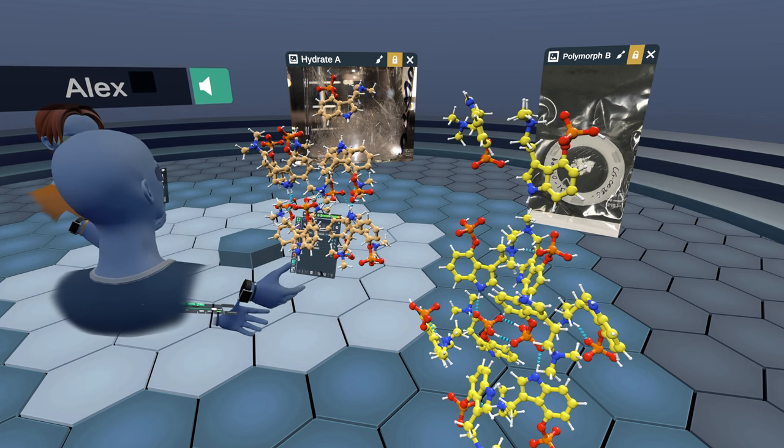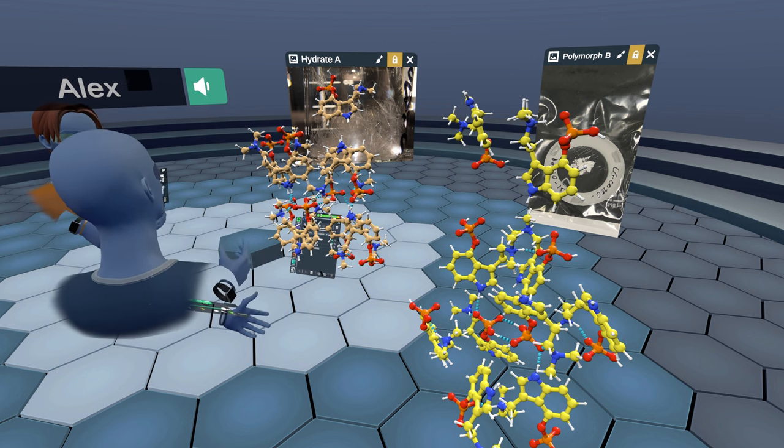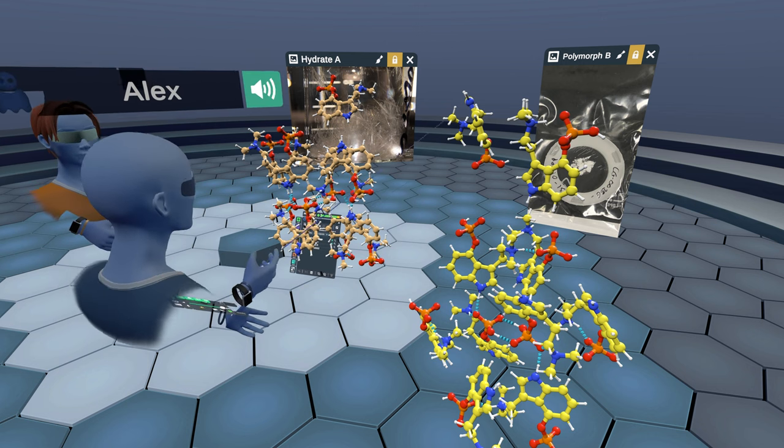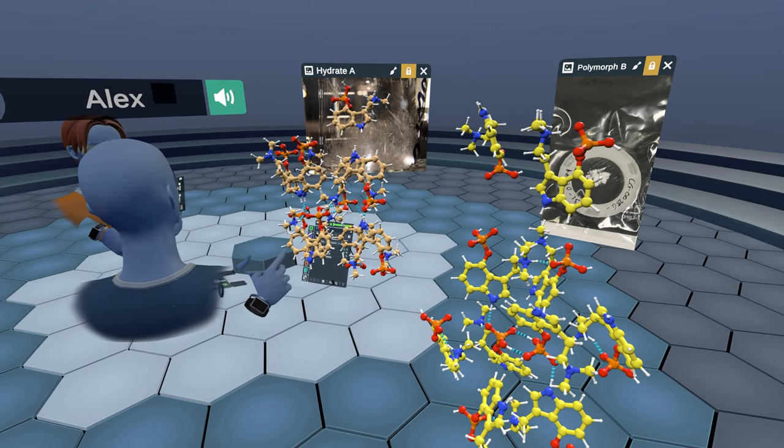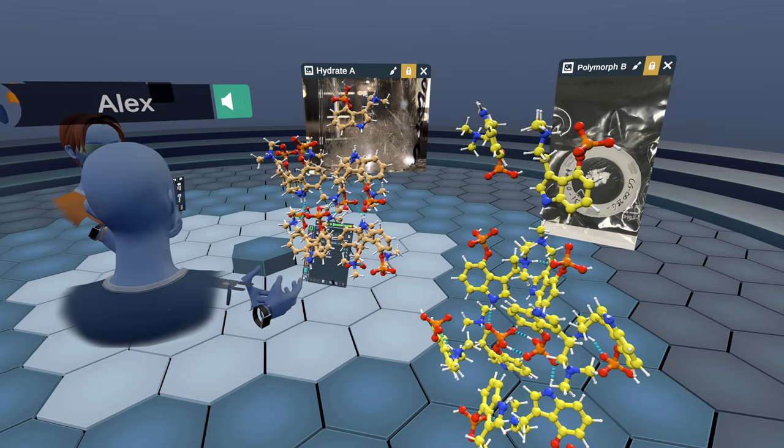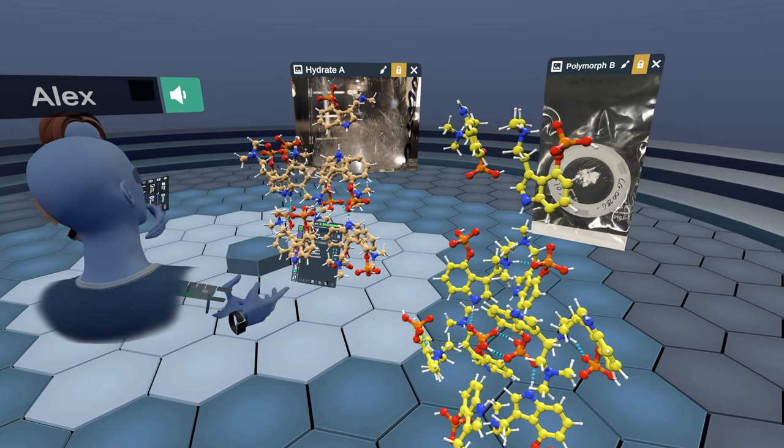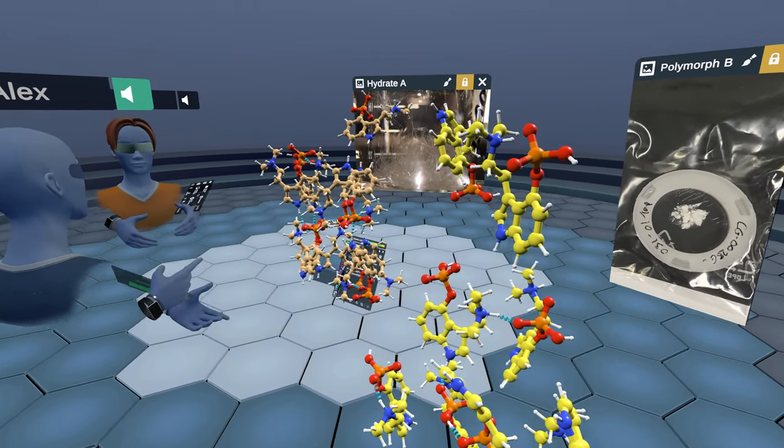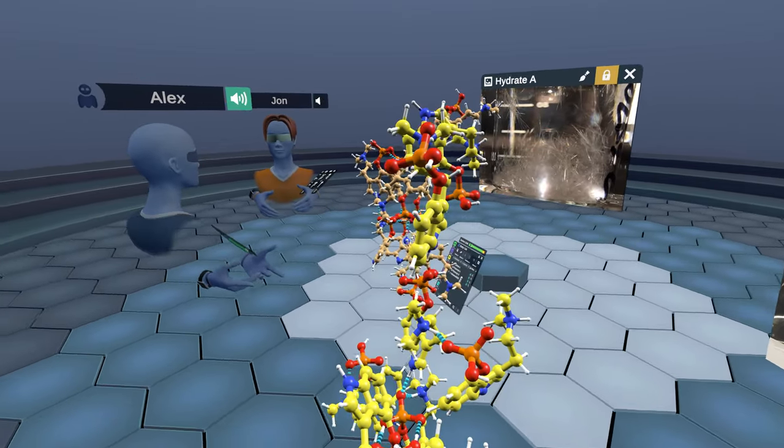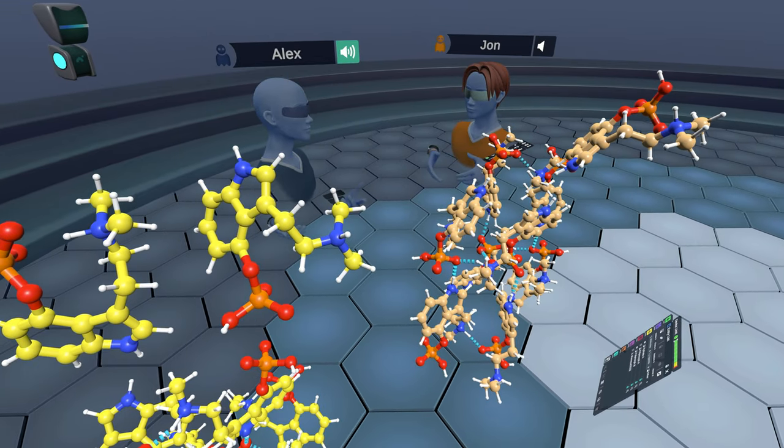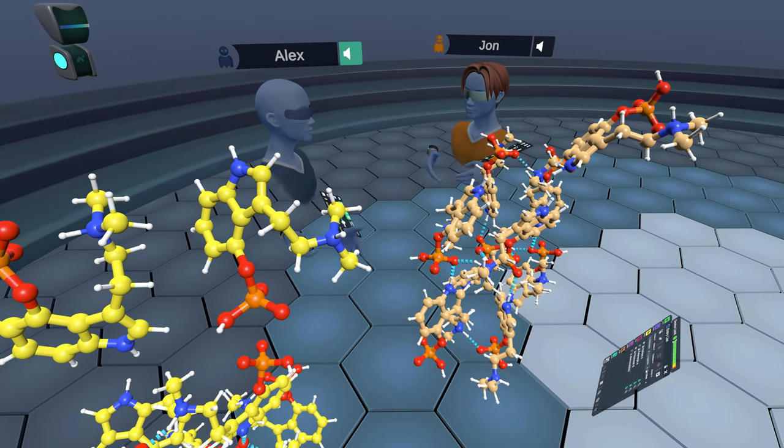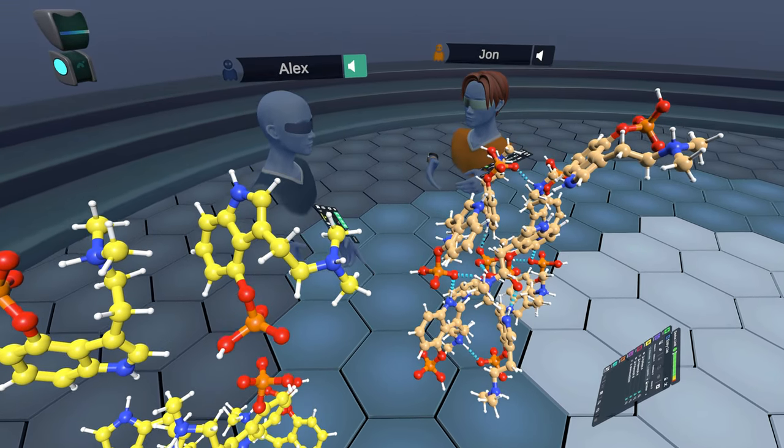And what that allows you to do then is if you have any powder pattern that was, say, a mixture of hydrate A, polymorph B, and polymorph A, with those calculated patterns, you can fit them to the mixtures and then determine exactly how much of hydrate A, polymorph A and polymorph B are in those powder patterns.